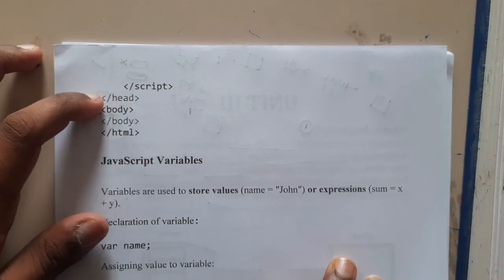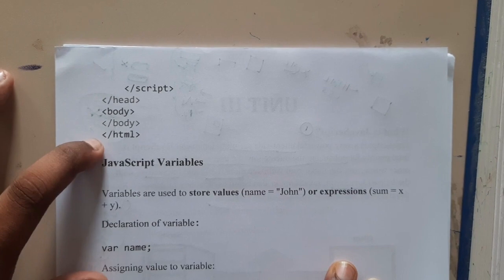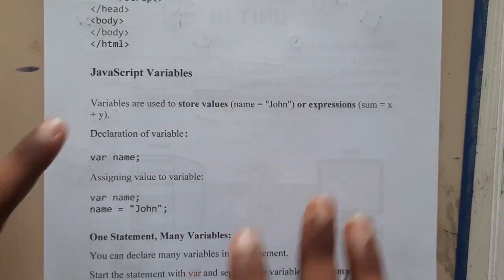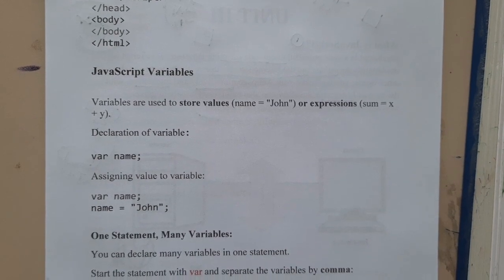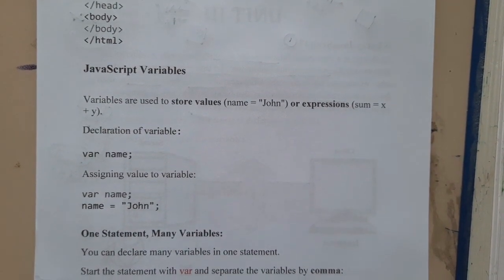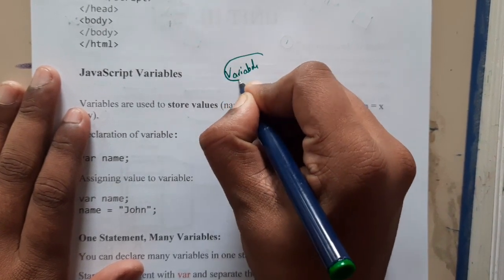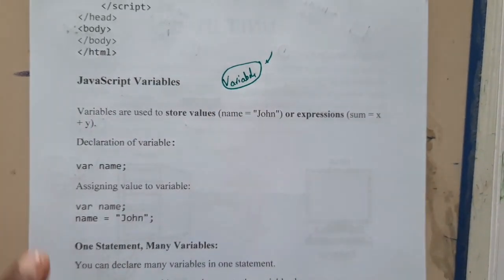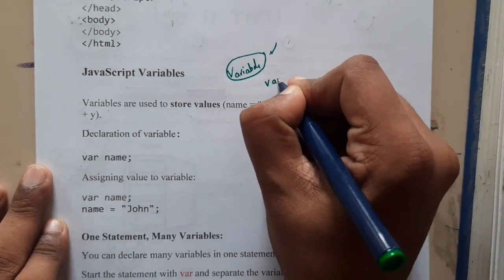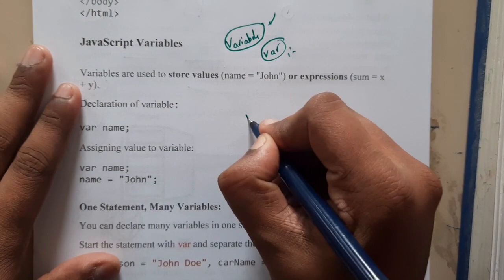We'll end this lecture once we are done with variables. You close the script and head tags, then start and end the body, and close HTML. Now, for JavaScript variables — if you want to store your name and print it, in JavaScript we have variables to store data. All variables are of a single type: var.